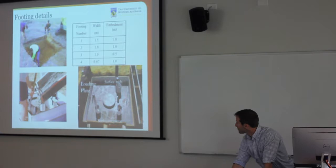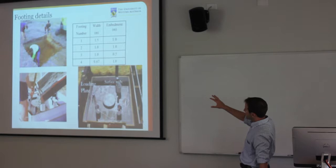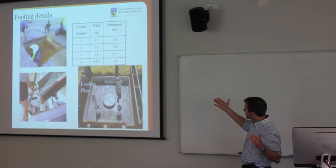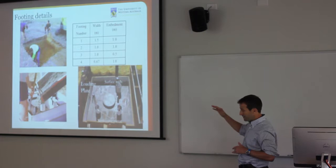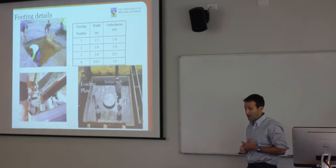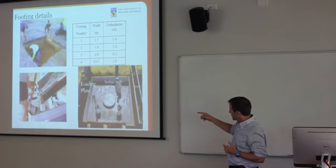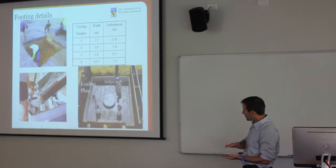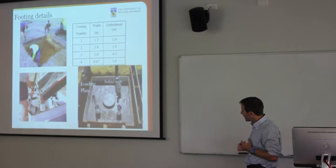The footing settlement competition involved constructing four shallow foundations — footings one, two, three, and four. Widths range from 1.5 metres down to 0.67 metres. Three of them were embedded at one metre and footing number three was embedded at half a metre. There was instrumentation around each footing, including settlement plates to record ground deformation below the footing, and the settlements of the foundations themselves were recorded.